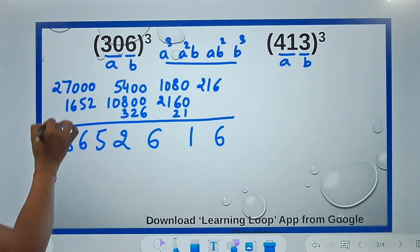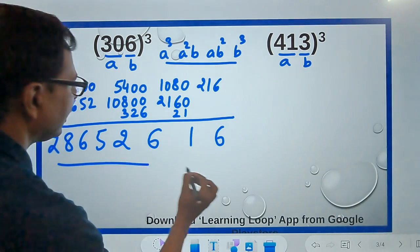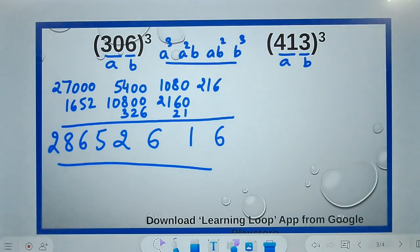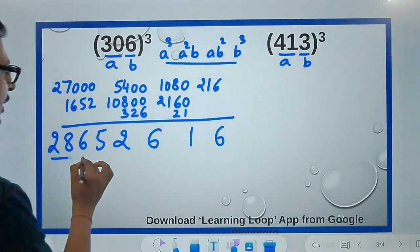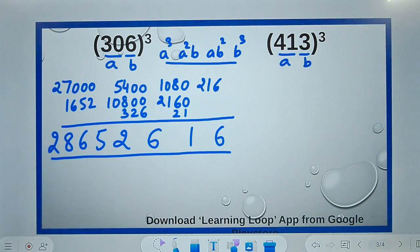Now let's pick up the calculator and check whether we have got the correct answer for this or not. I am sure you are going to be surprised that the cube of 306 is indeed 28,652,616.